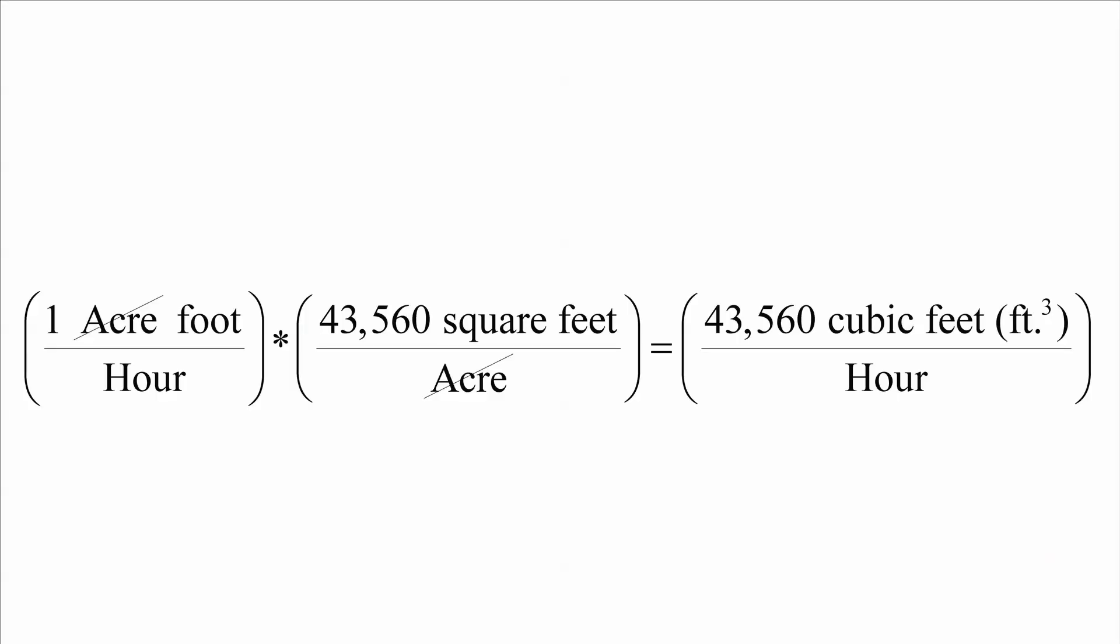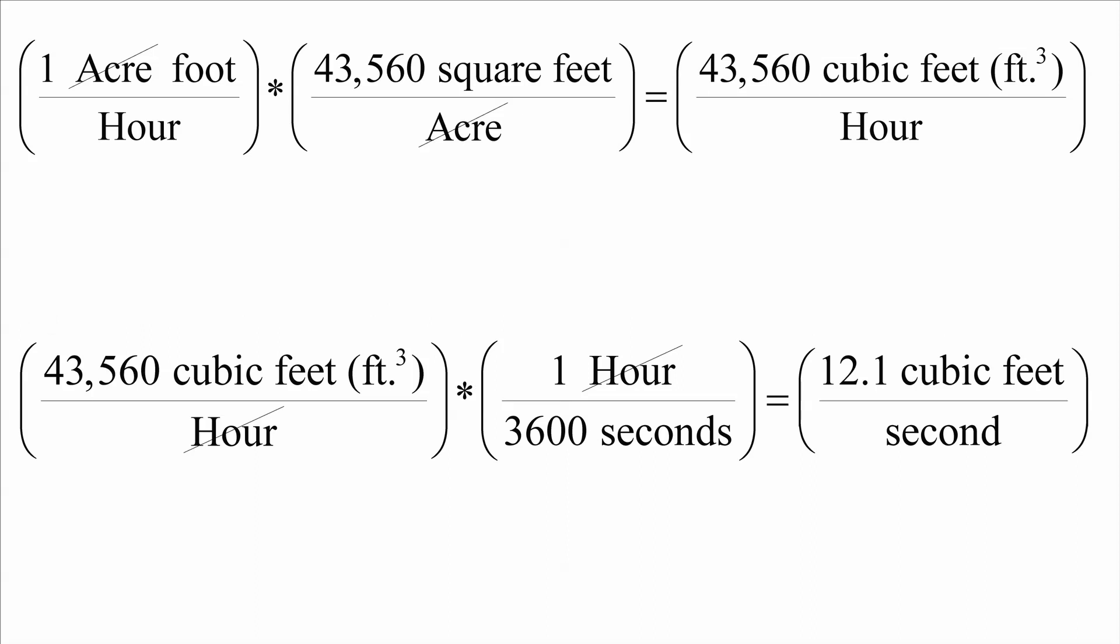Acre feet per hour can easily be converted to cubic feet per second by simple manipulation of conversion factors. Start by converting acre feet into cubic feet using the conversion factor 1 acre foot equals 43,560 cubic feet. Now convert cubic feet per hour into cubic feet per second using the conversion factor 1 hour equals 3600 seconds.